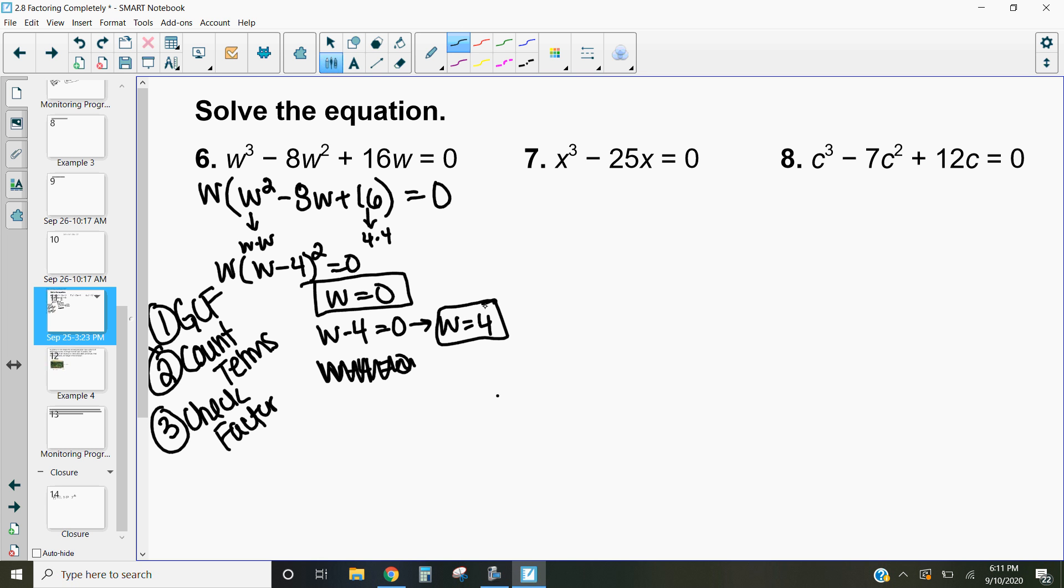Now go ahead and pause the video and run through examples 7 and 8 on your own. Check through those things. Is there a greatest common factor? How many terms do I have? Which method am I going to use? Is everything factored out as much as it can be? If it is, then I'm going to set each of those parts equal to 0 and move forward. So go ahead and pause the video. When you finish running through these examples, unpause the video and check your work.